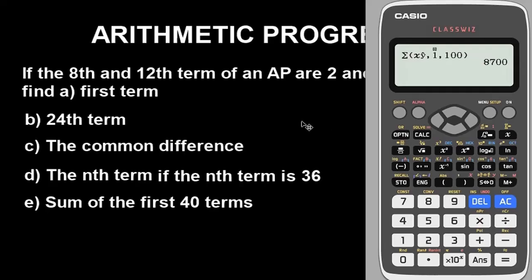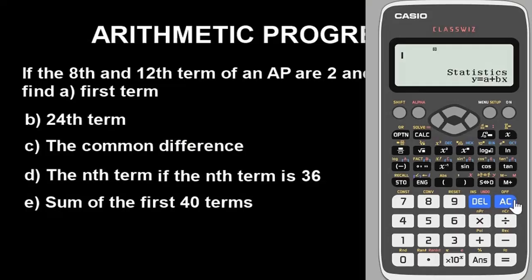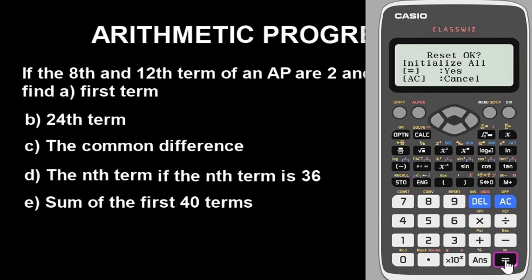Basically, we have shown how to find any term, the common difference, the nth term, and the sum of an AP with the ClassWiz calculator. That brings us to the end of this class. If you're new to the channel, please subscribe, like, share, and comment to let me know how you feel about what you've learned. Leave any specific questions in the comment section below.